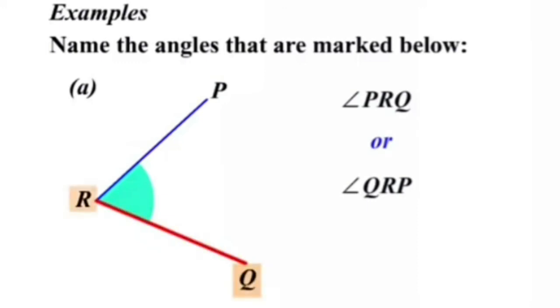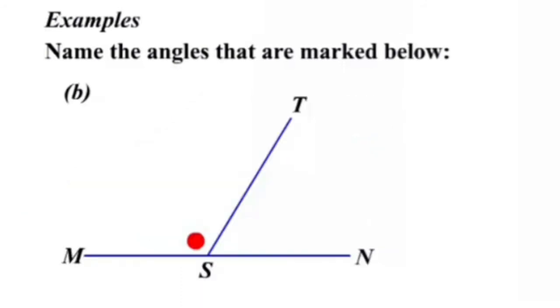Sometimes, we also represent an angle as angle R. The letter R used here is the vertex of the angle.